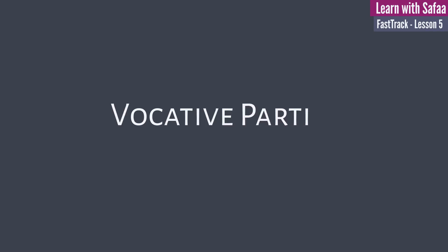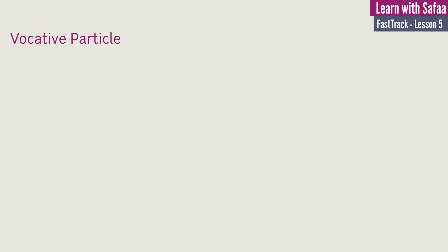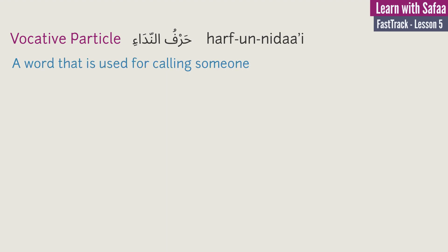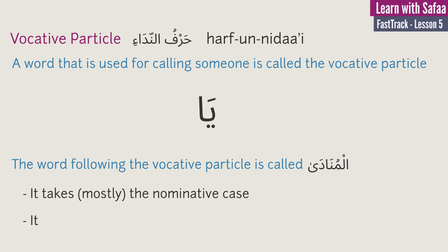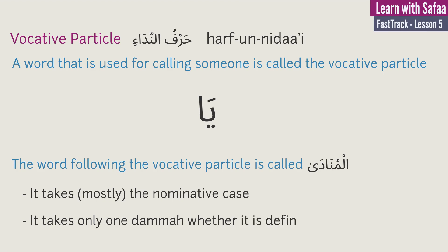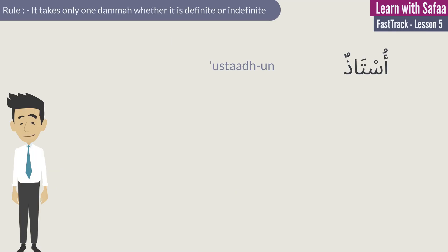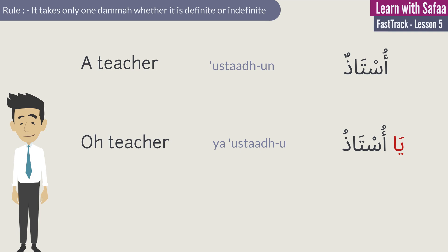Now we are going to learn about the vocative particle, called harf-un-nida'i in Arabic. The vocative particle is a word used for calling someone. In Arabic, the vocative particle is ya. The word following it is called al-munada. It mostly takes the nominative case with one dhamma, whether definite or indefinite. For example: ustadun — a teacher; ya ustadu — O teacher.